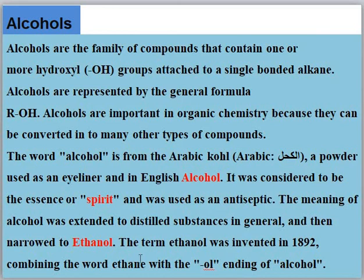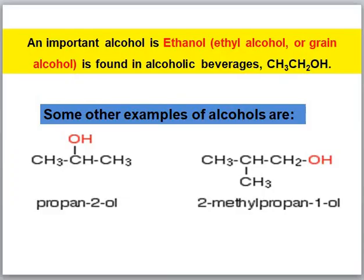The term 'ethanol' was invented in 1892 by combining the word 'ethane' with the '-ol' ending of alcohol. The most common and important alcohol is ethanol, or ethyl alcohol. It is also known as grain alcohol and is usually found in beverages. It is represented as CH3CH2OH. Some other examples of alcohols are propanol, 2-methyl-1-propanol, etc.